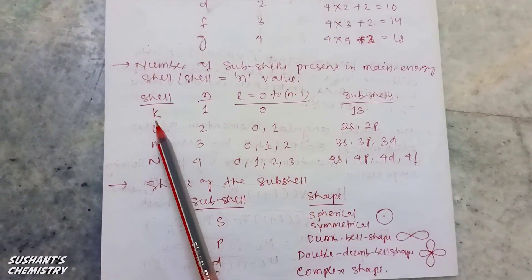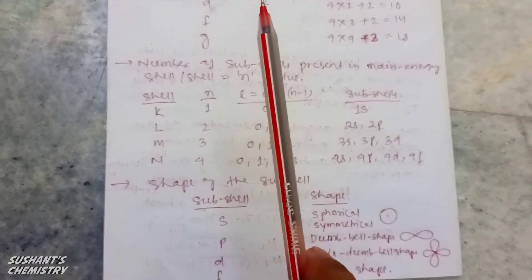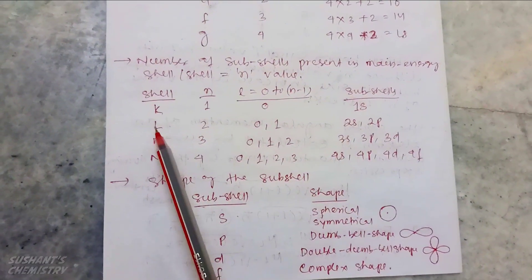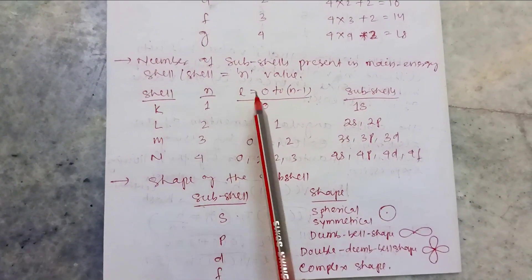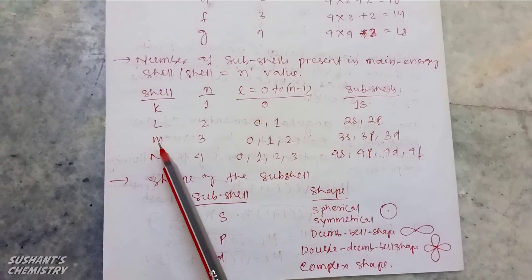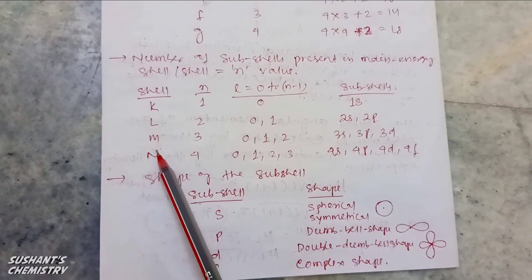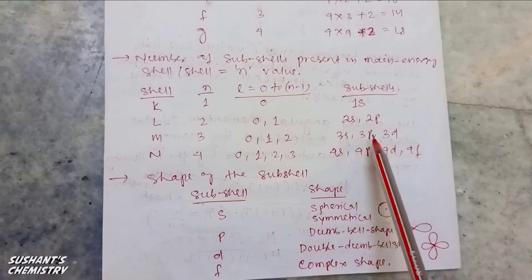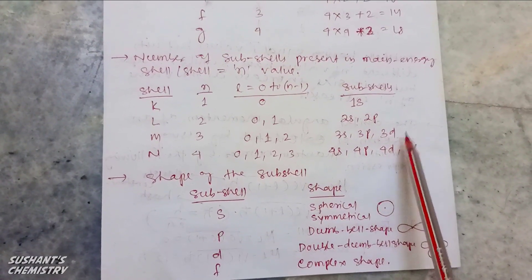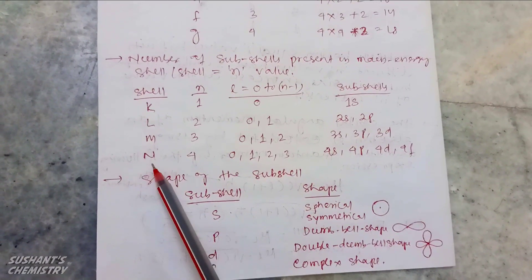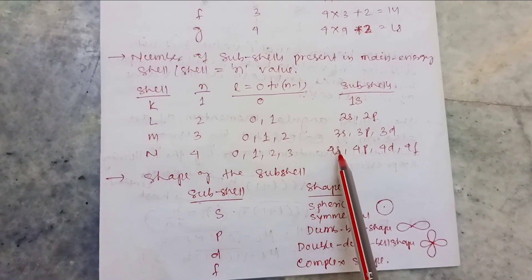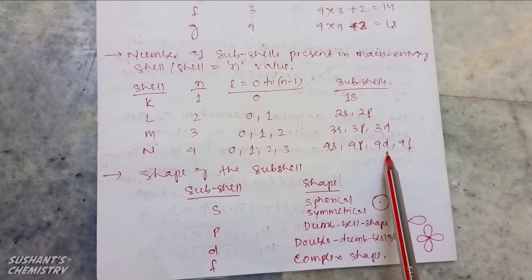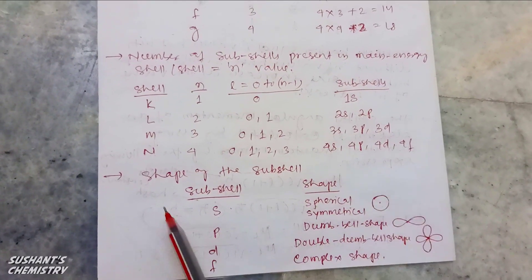In summary, the K cell contains 1 sub-cell, that is 1s. The L cell contains 2 sub-cells: 2s and 2p. The M cell contains 3 sub-cells: 3s, 3p, and 3d. The N cell contains 4 sub-cells: 4s, 4p, 4d, and 4f.